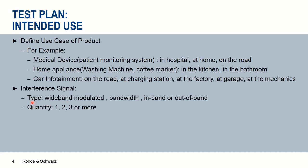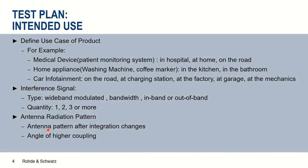The second part of the intended use module is to understand the different types of interference signals to use. They are normally wideband modulated signals with wide bandwidth. We need to consider what bandwidth to use and place them as in-band and out-of-band interferences. We also need to understand the number of interference signals we want to test our product with, and finally understand the radiation pattern characteristics after integrating the antenna module — requiring an antenna characterization measurement on the finished product.